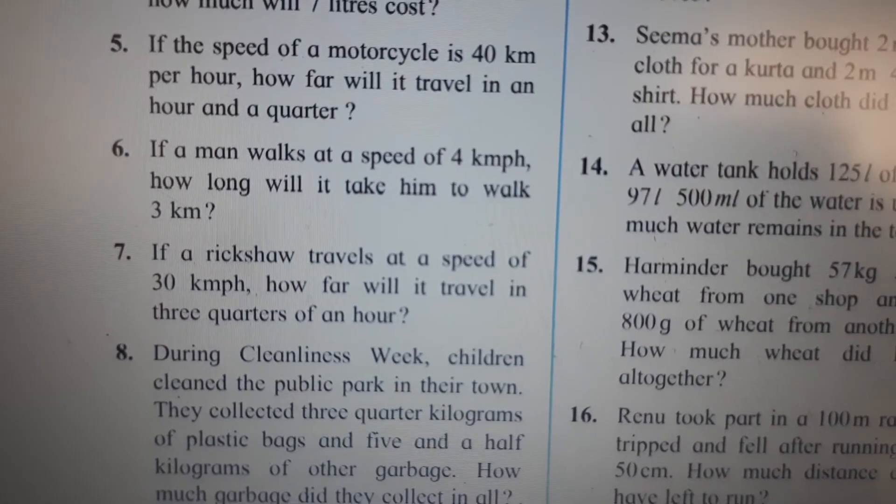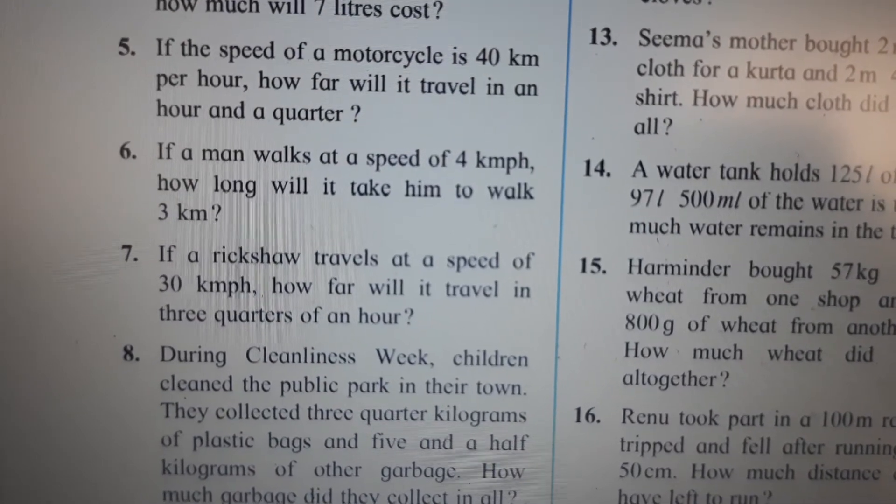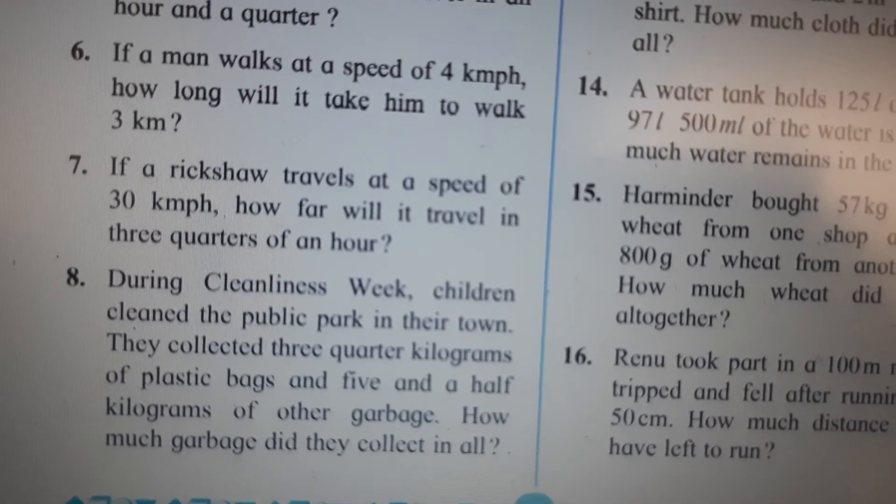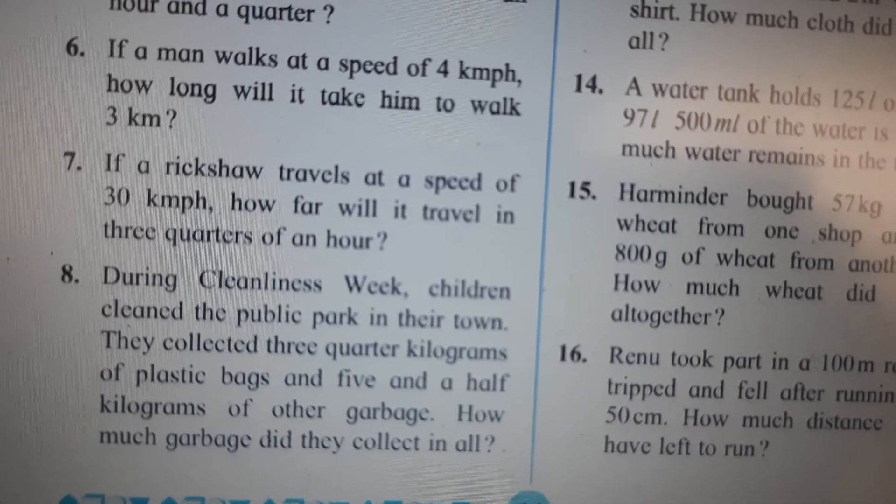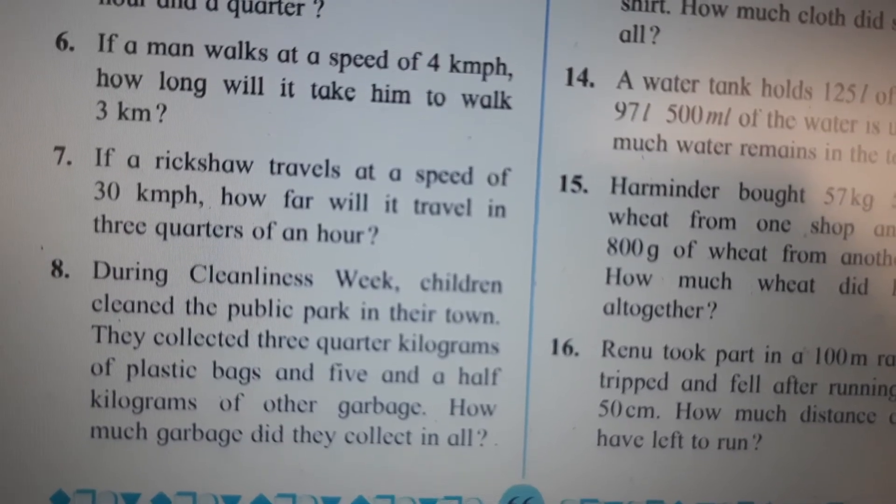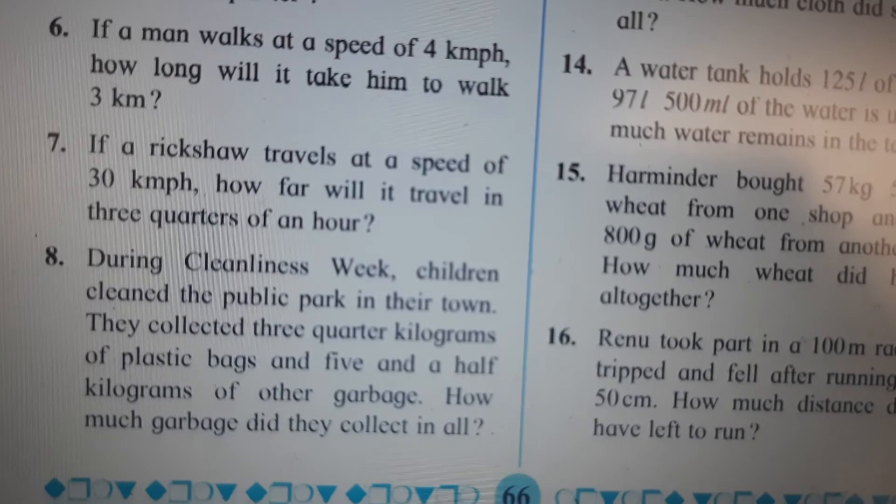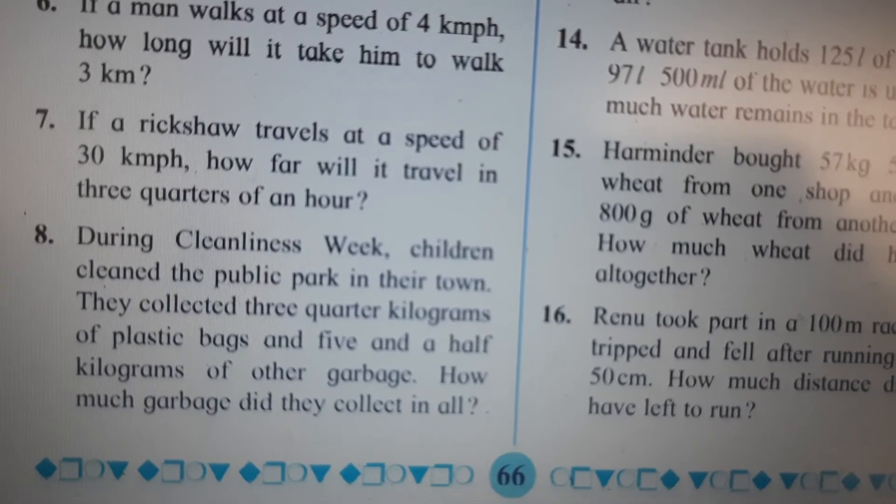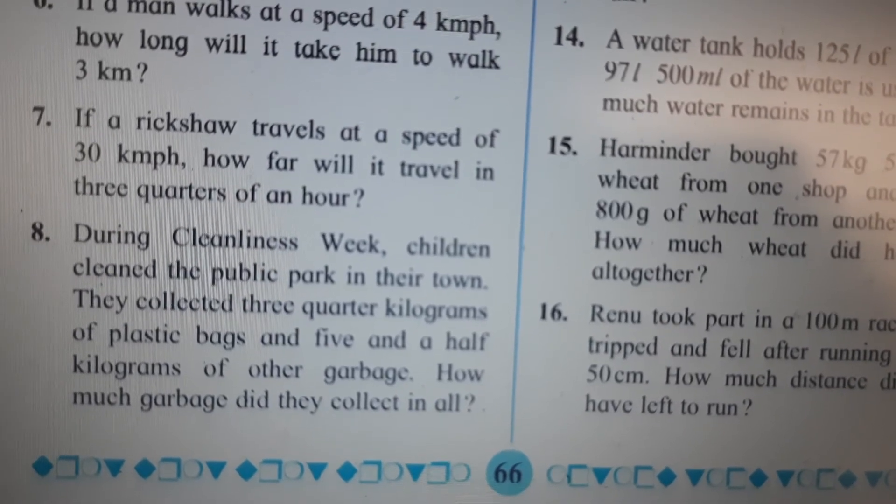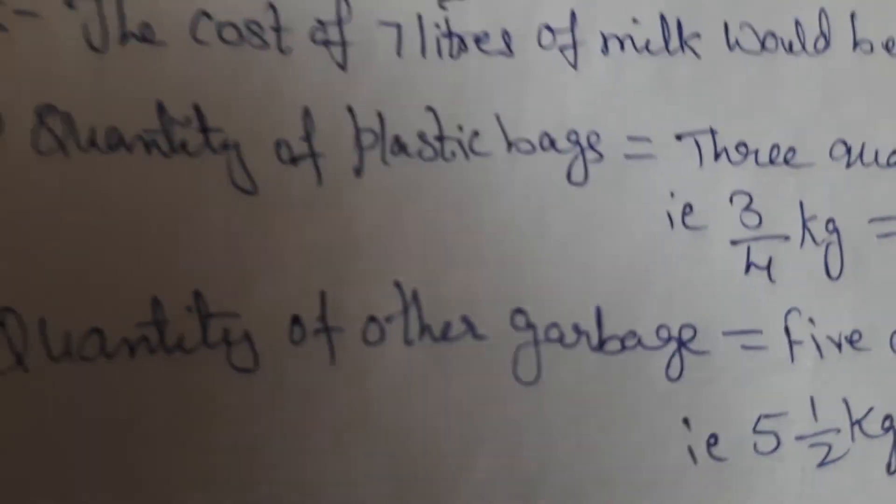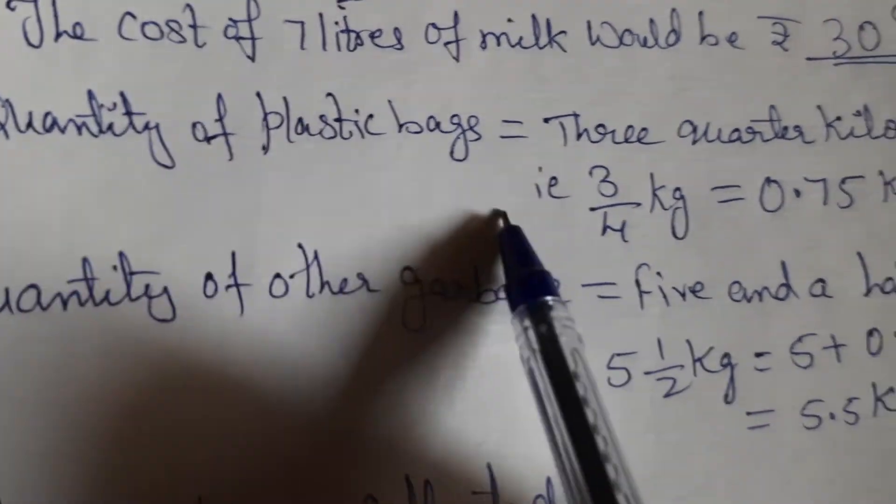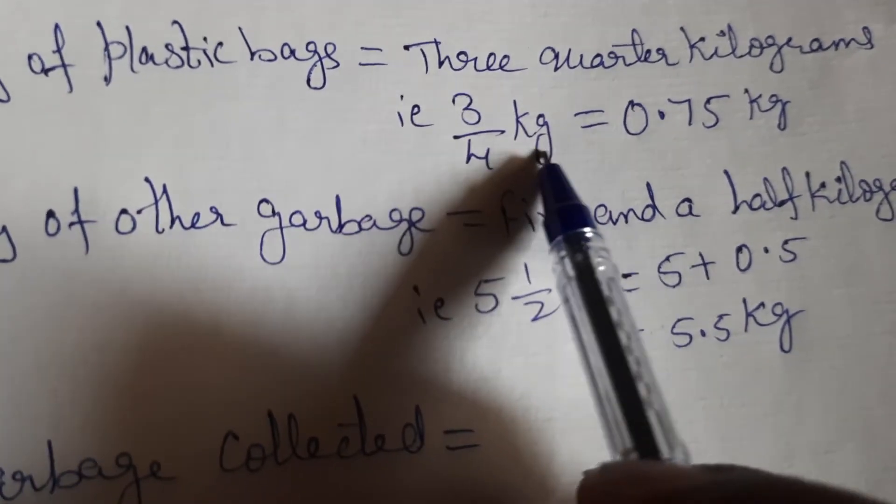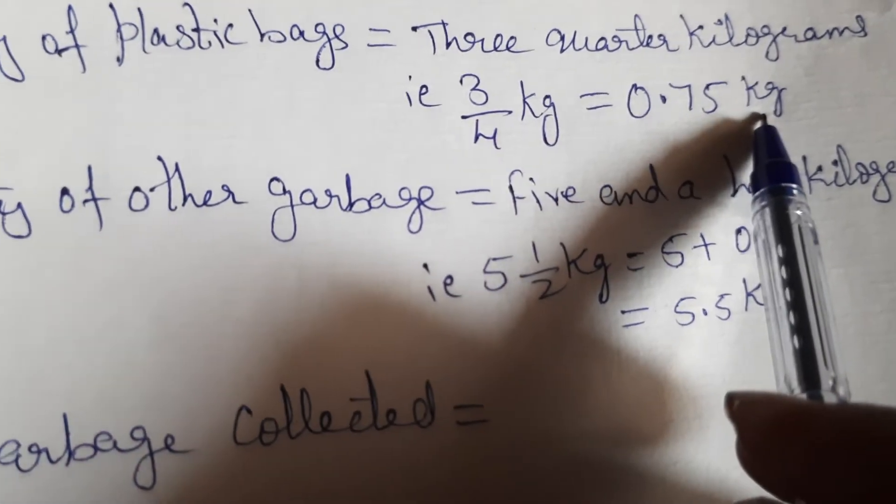The 5th sum, 6th sum is for homework. You can try it out. If you don't get I will work out for you. 5th, 6th, 7th, 8th, I will solve it for you. So during cleanliness week children cleaned the public park in the town. They collected 3 quarter kilograms of plastic bags and 5 and a half kilograms of other garbage. How much garbage did they collect in all? Okay. So first let us find out 3 quarter kilograms is how much and 5 and a half kilograms is how much. So first you write down like this quantity of plastic bags. That is 3 quarter kilograms. And 3 quarter kilograms means 3 upon 4 kg or 0.75 kg.